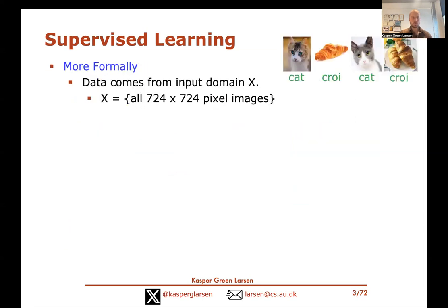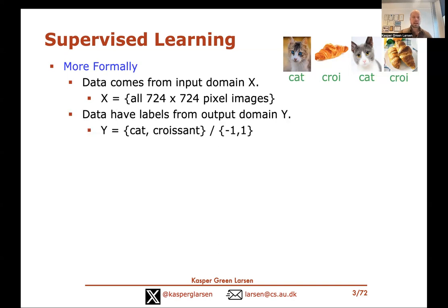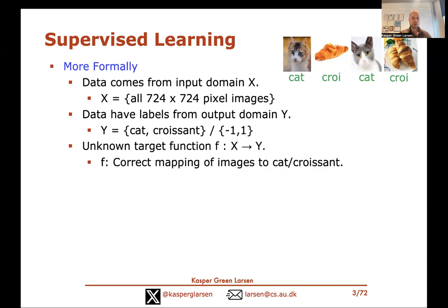More formally, the data comes from an input domain X — for instance, all images of a particular size — and labels come from an output domain Y, which could be cats and croissants, or minus one and one as is more typical for binary classification. What we're trying to learn is some unknown target function f, a mapping from the input domain to the output domain — the correct mapping of images to cats and croissants.